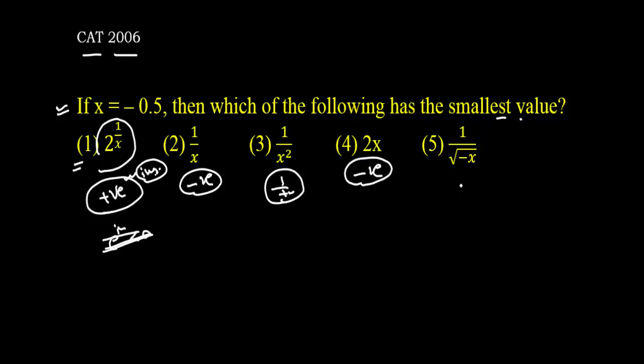1 upon root of minus x. 1 upon root of minus of minus 0.5 is nothing but 0.5. Root of 0.5 is a positive value, and 1 upon is always a positive value. So we need to compare these two values because these two values are negative.